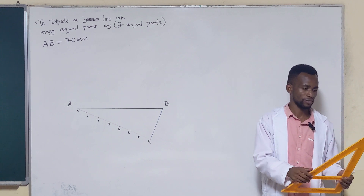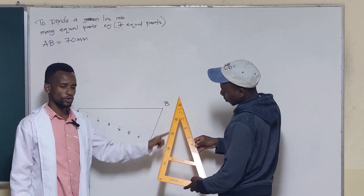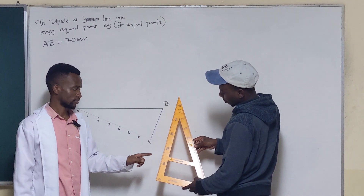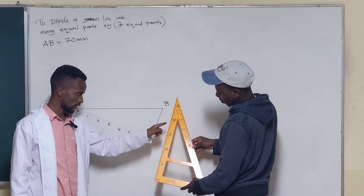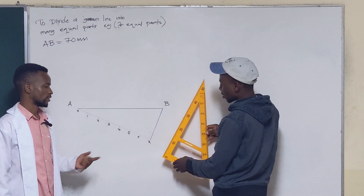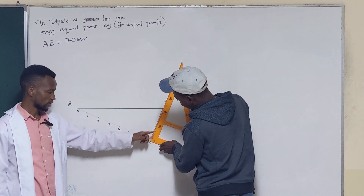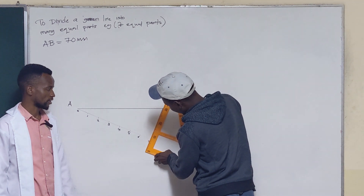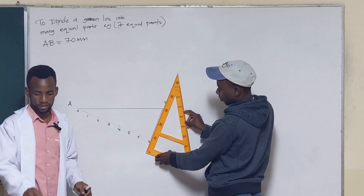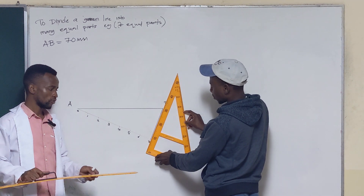You want to align one of the edges of the set square with the given line — the line that you want to draw a parallel to. You can choose any of the edges. This is the line that you want to copy, so you align the set square with it. After it has been aligned, you lock it with another straight edge — this can be a T-square, ruler, or another set square. Make sure there is no gap; it should be flush.